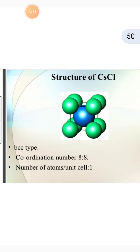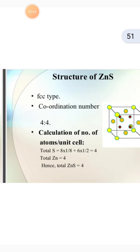Structure of CsCl: it is a BCC type and the coordination number is 8 to 8. The number of atoms per unit cell is equal to 1.